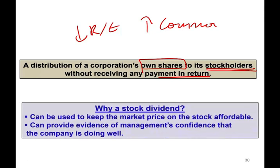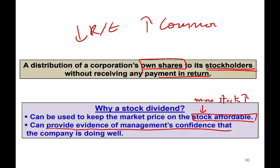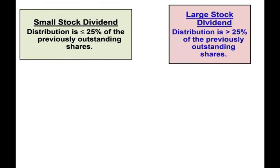It's a distribution of the corporation's own shares to its stockholders without receiving any payment in return. They're going to reduce retained earnings and increase common stock. Why do they give you common stock rather than cash? It can be used to keep the market price of the stock affordable — if they issue more stocks, the stock price goes down, making it affordable. It also provides evidence of management confidence that the company is doing well, reinvesting in itself by taking retained earnings and converting them into common stock.